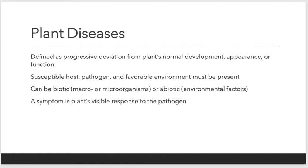Plant diseases require a susceptible host and a pathogen, and they must have an environment — so all three things must be present. The host would be the plant, the pathogen would be whatever is causing the issue, and the environment has to be correct. Some pathogens cannot live in certain environments, whether it's cold, hot, wet, or dry. It can be biotic — meaning macro or micro organisms — or abiotic, meaning an environmental factor that causes a plant disease.